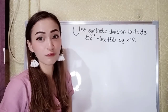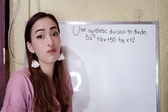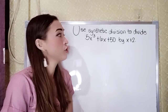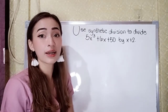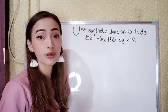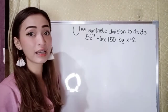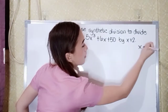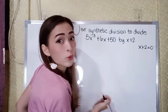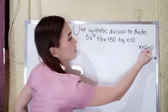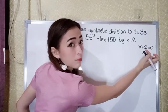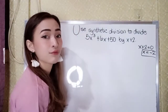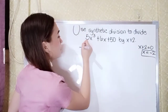For our first example, we'll use synthetic division to divide 5x cubed plus 6x plus 50 by x plus 2. Our divisor here is x plus 2. To find the divisor value, equate x plus 2 equal to 0, so x equals negative 2. So our divisor is negative 2.